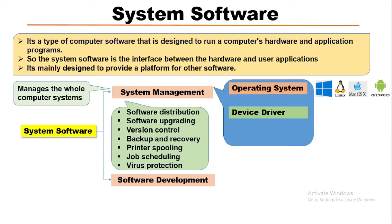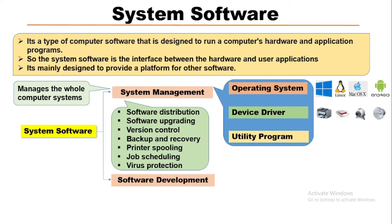Next is device driver. Device driver softwares are also essential system softwares for different computer devices like printers, scanners, cameras, and sound systems. Every device needs to have a separate device driver installed. Next is utility software, which is also an essential system software for different utility programs like file management and disk management.